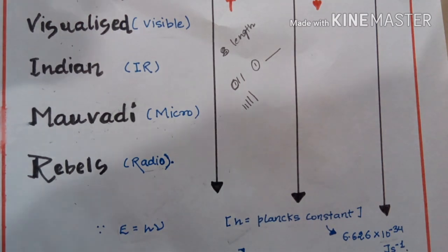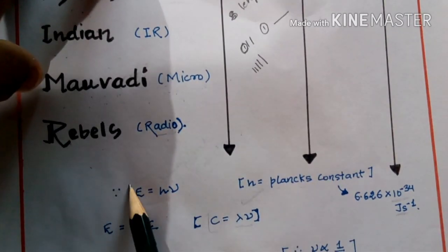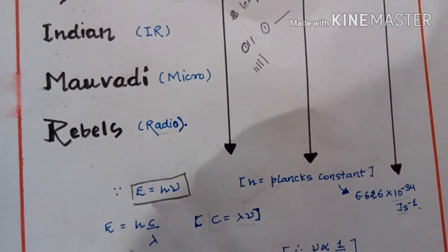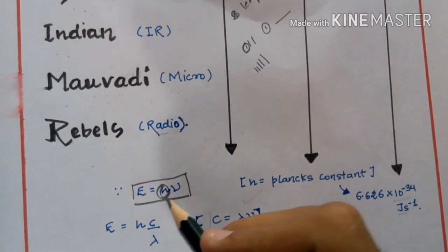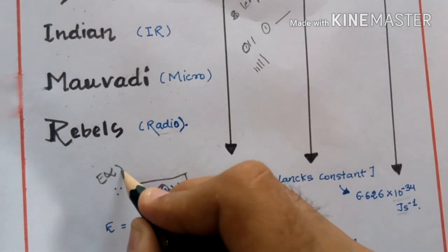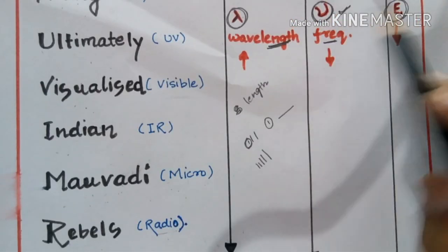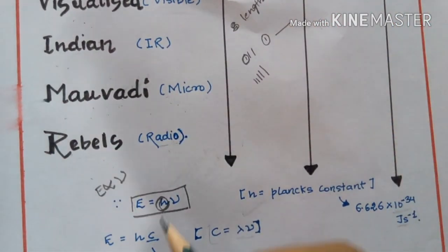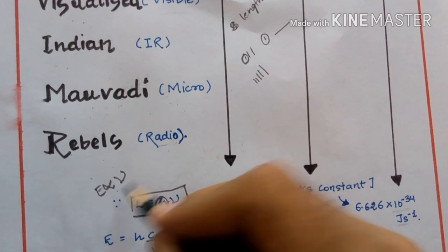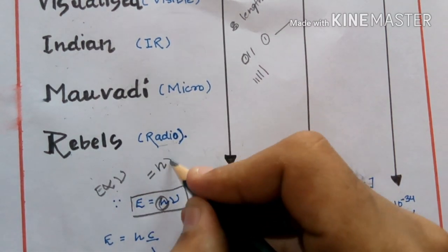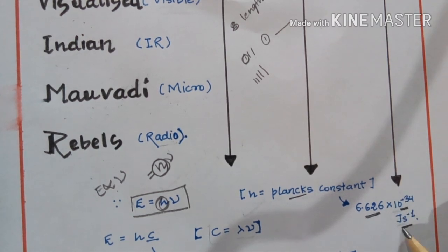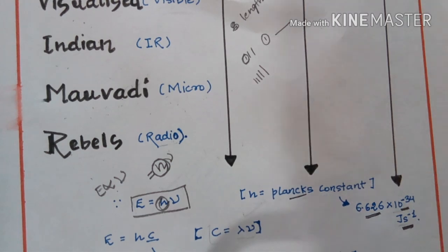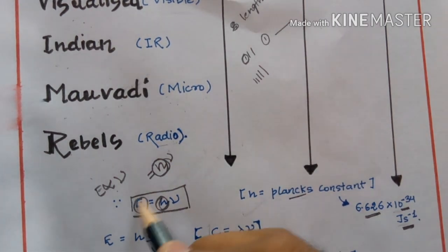There are some formulas for numerical problems on this topic. Energy is related to frequency by the formula E equals H-nu, where H is a constant. Since energy is directly proportional to frequency, we introduce a proportionality constant H, known as Planck's constant, which has a value of 6.626 into 10 raised to the power minus 34 joule per second.